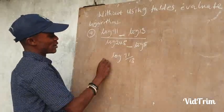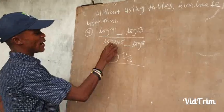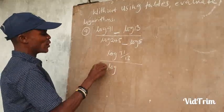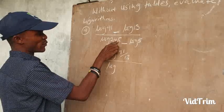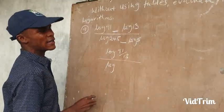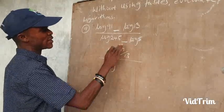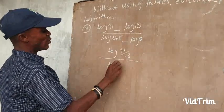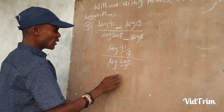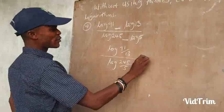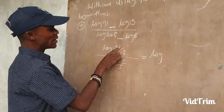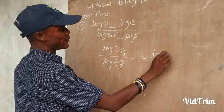This long division is what I have transferred. I now have a single log. I will take one of the two logs. Then we have 245 minus — because of the minus here, we are going to divide. Anytime you see subtraction, you divide the log. That becomes 245 divided by 5. The log at the top is still there.